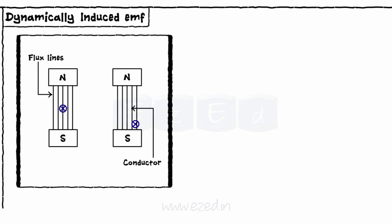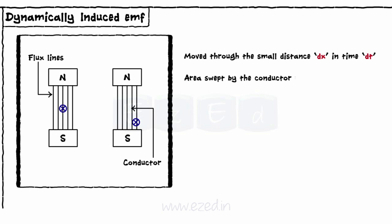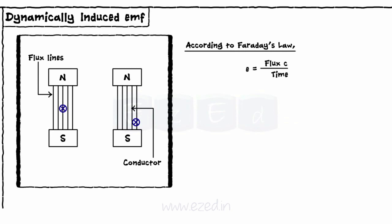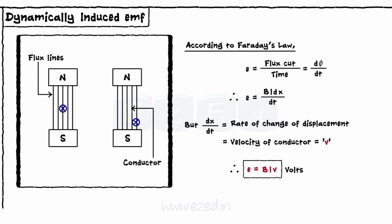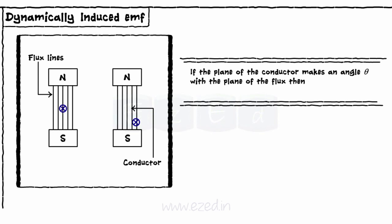Let a conductor placed in a magnetic field be moved through a small distance dx in time dt. Then, area swept by the conductor equals length into dx. Flux cut by the conductor equals flux density into area swept. According to Faraday's law, the magnitude of induced EMF is proportional to the rate of change of flux. Substituting the value of d phi, and since dx by dt represents the velocity of the conductor, therefore E equals BLV volts. If the plane of the conductor makes an angle theta with the plane of the flux, then the EMF induced is given by E equals BLV sin theta.